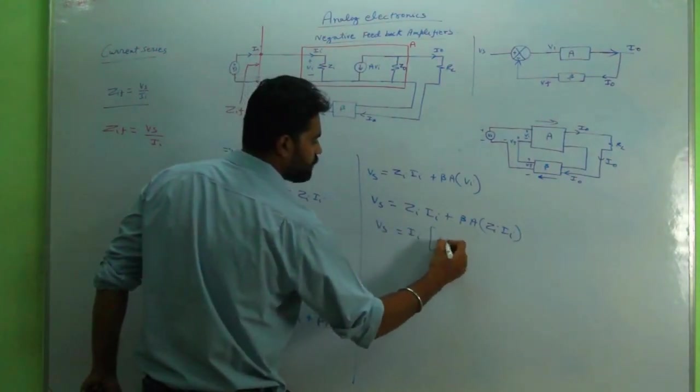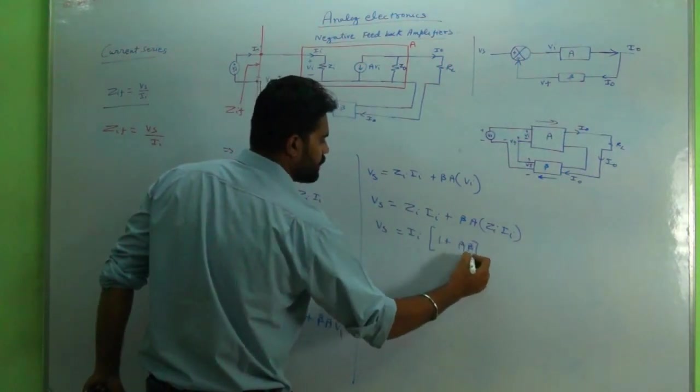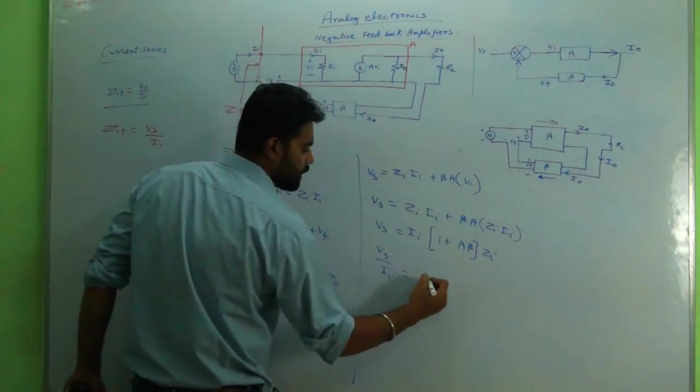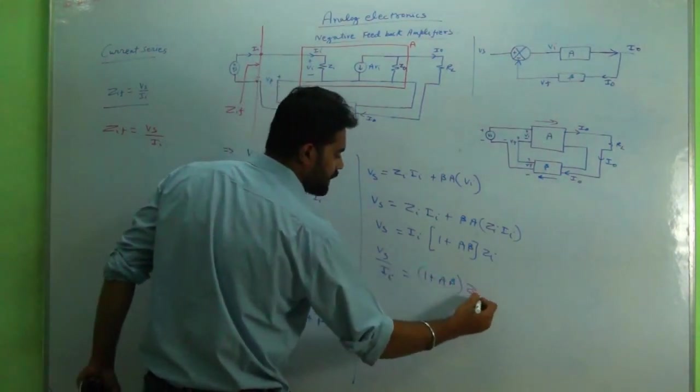Obviously vs equals ii, I will take common and zi. So 1 plus a into beta into zi. So vs upon ii is equal to 1 plus a beta into zi.